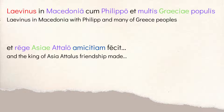Then: Laevinus in Macedonia cum Philippo et multis Graeciae populis et rege Asiae Attalo amicitiam fecit. Laevinus — the guy who had gone to Macedon and defeated Philip — fecit amicitiam, he made friendship, he made peace in Macedonia, cum Philippo, with Philip, and with many peoples of Greece, and with King Attalus of Asia — really referring to Pergamum in modern-day Turkey. So he's winning and making peace treaties with these peoples after defeating them.